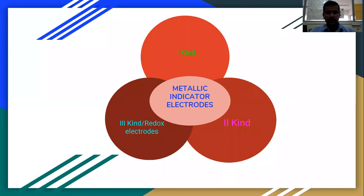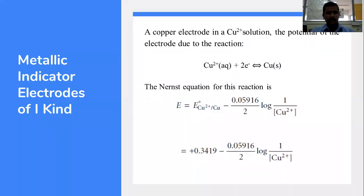Metallic indicator electrodes of the third kind are seldom referred to by that name; they are commonly called redox electrodes or inert redox electrodes. Let us discuss one by one the meaning of metallic indicator electrodes and the species to be determined by each type, including second kind and redox electrodes. Consider first the metallic indicator electrode of the first kind.